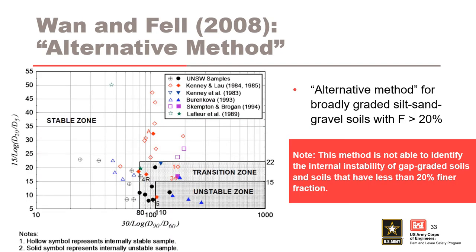Experience in using the modified Burenkova method led Wannenfeld to realize that soils with a steep slope on the coarse fraction and a flat slope on the finer fraction were likely to be internally unstable. After some trials, it was determined that these could be represented by D90 over D60 and D20 over D5. This figure shows two boundaries: one beyond which likelihood of internal instability is low, and another defining an area in which soils are highly likely to be internally unstable. This method is not able to identify internal instability of gap graded soils.